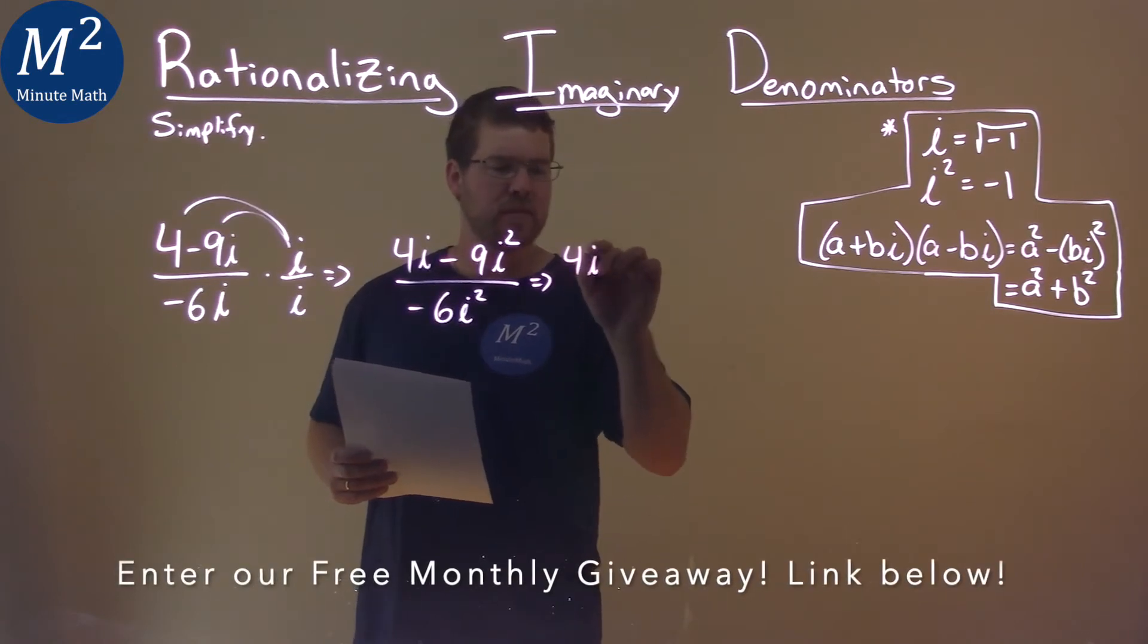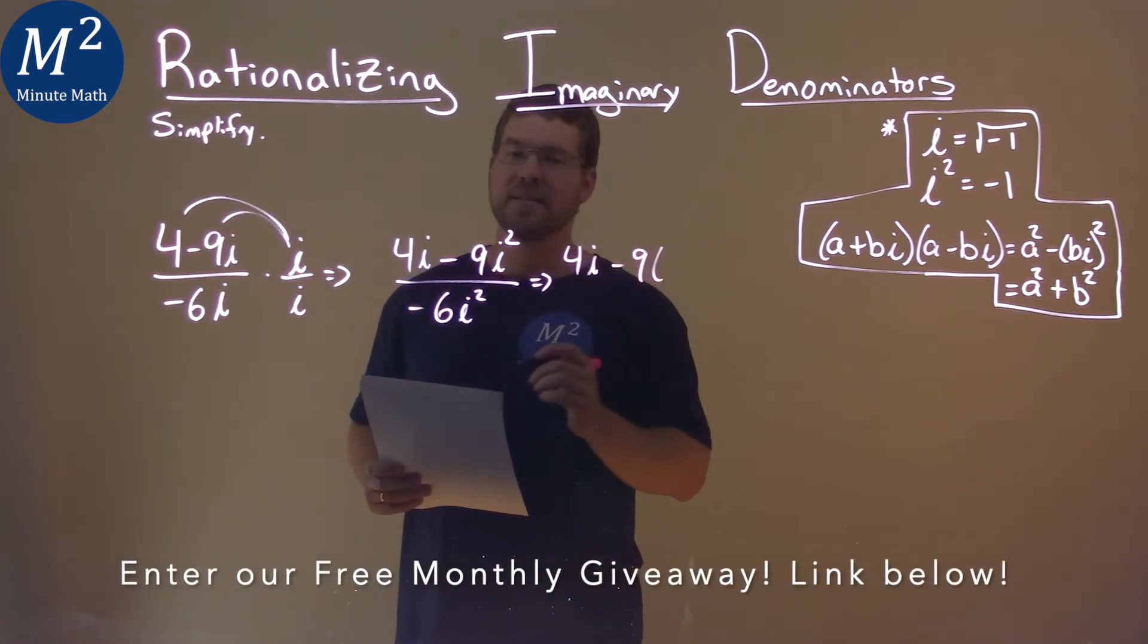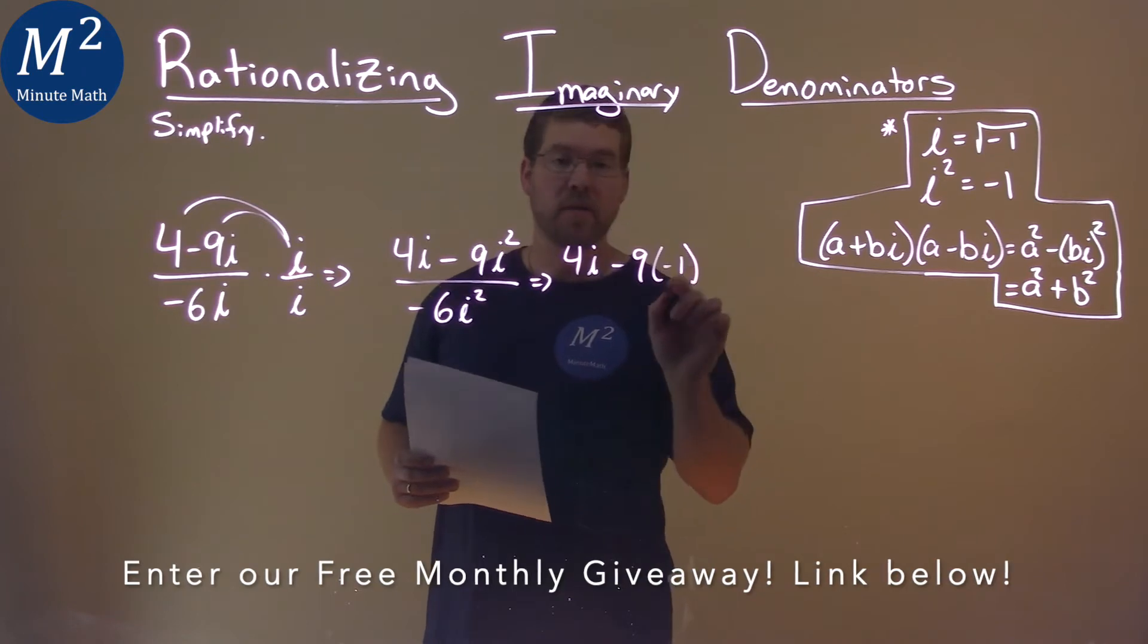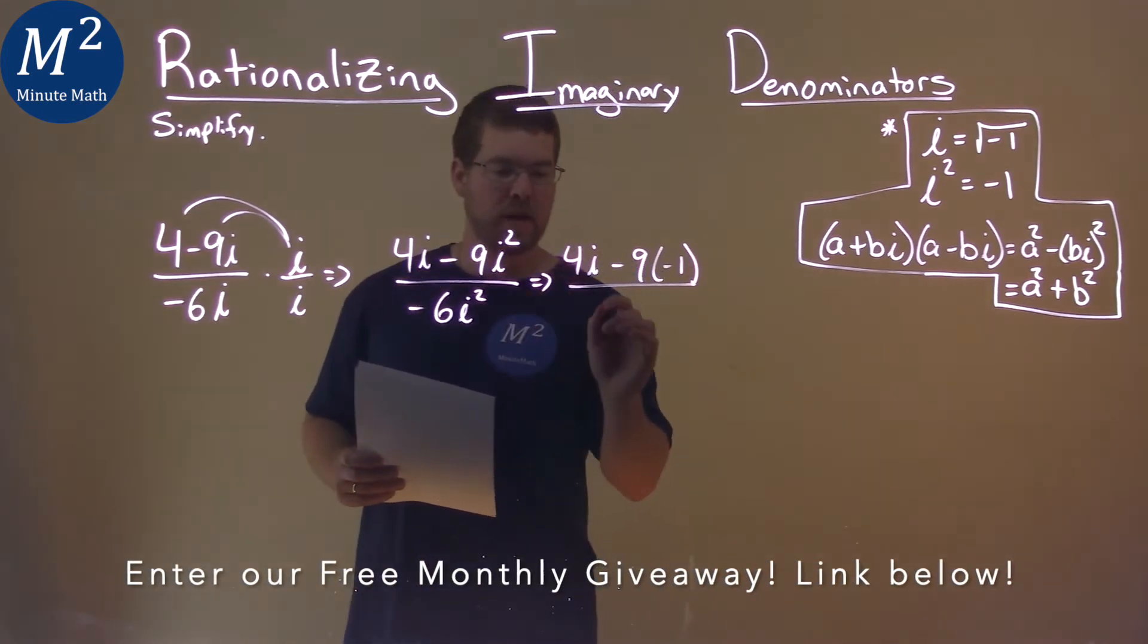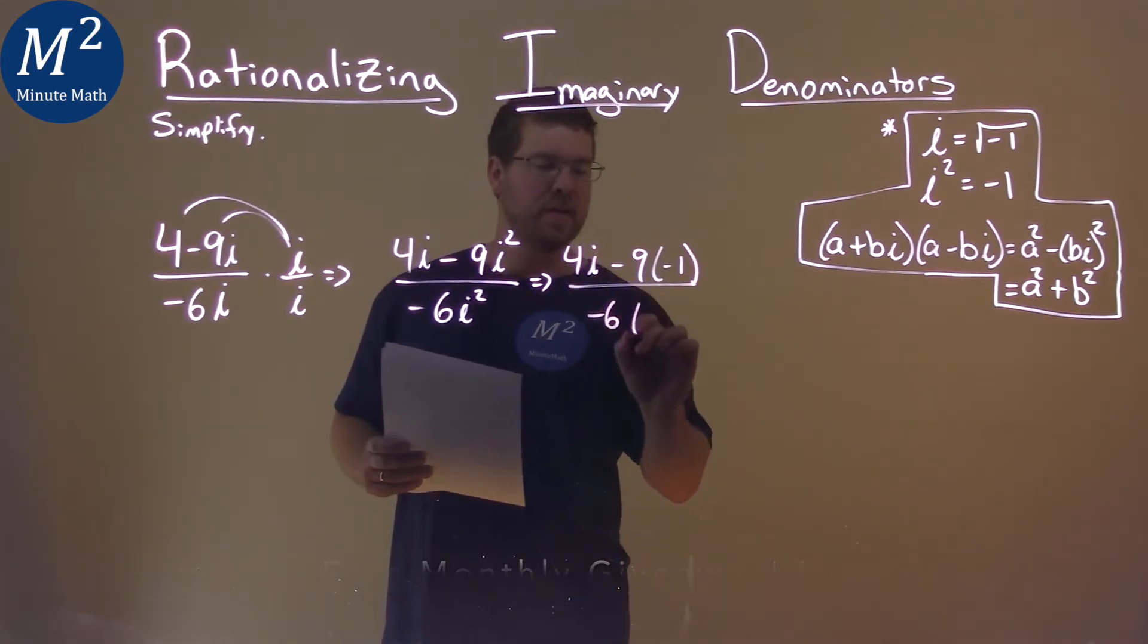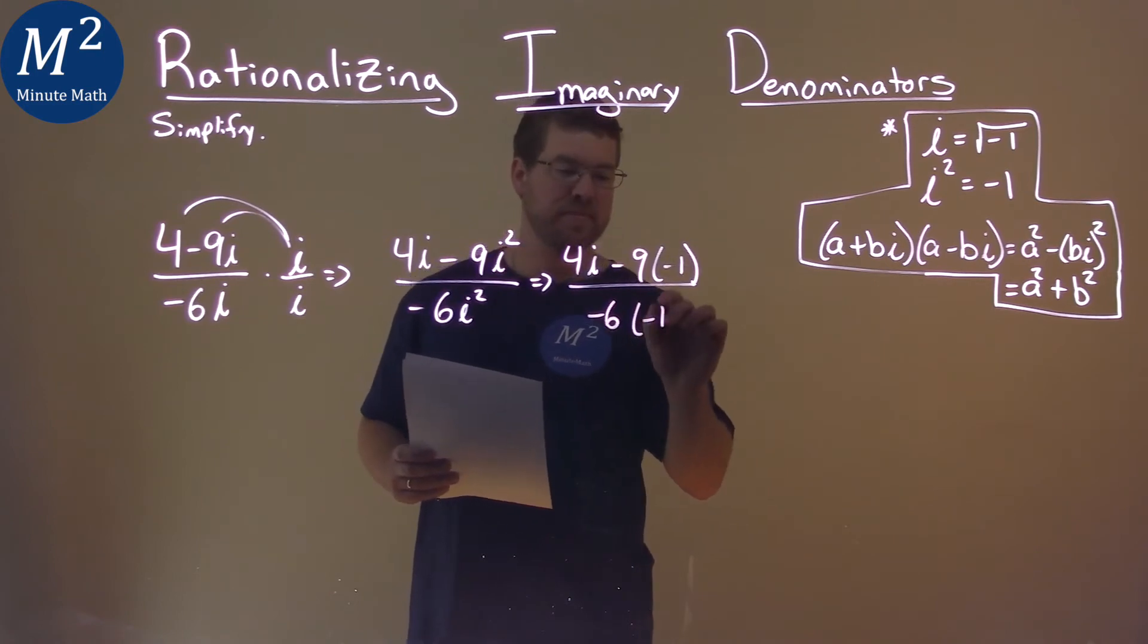So we rewrite this as 4i minus 9, and instead of i squared, negative 1. Same thing in the denominator, negative 6 times, instead of i squared, negative 1.